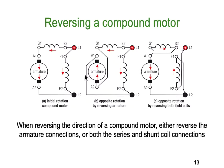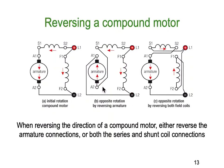Reversing a compound motor: the same applies — you've got to reverse either all the field or all the armature. When reversing direction of a compound motor, either reverse the armature connections or both the series and shunt coil connections. In arrangement A is the original. In B, everything has stayed the same except we've simply reversed the armature connections end to end. In C, the armature has stayed the same direction, but we have reversed that field connection and this field connection — you must reverse both parts of the field in a compound motor.